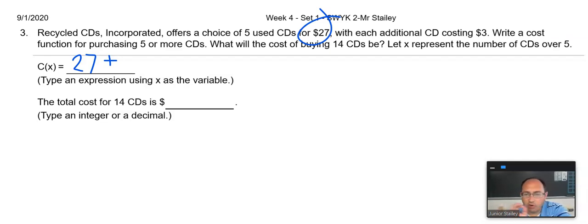Now, let's focus on the function first. Ignore the rest of that stuff. When I go up, let's say I've got my, you know, I've got in my hand, I got seven CDs, right? Well, the first five are going to get charged $27. After that, each additional CD is going to cost me $3. So, $3 times however many I have that are over the first five.